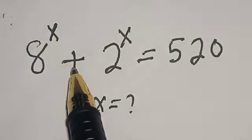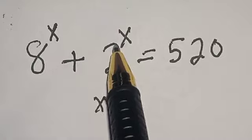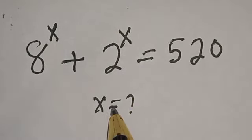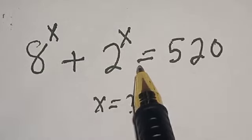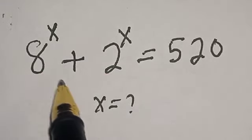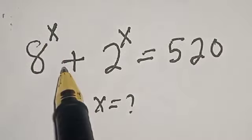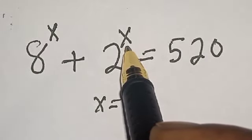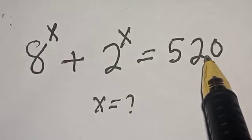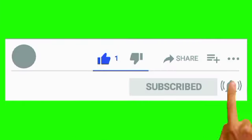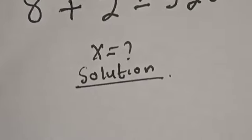8 raised to power x plus 2 raised to power x is equal to 520. What is the value of x? Hi everyone, welcome to my class. In this class we want to find the value of x from this given equation. Before we proceed, please don't forget to like, share, comment and subscribe. Solution: we have the given equation 8 raised to power x plus 2 raised to power x is equal to 520.